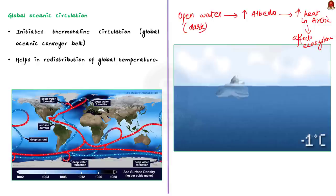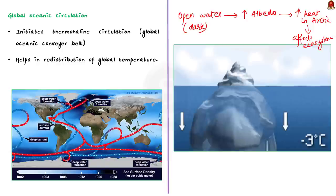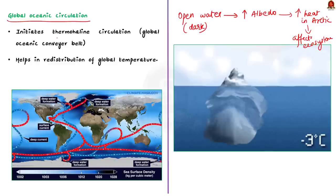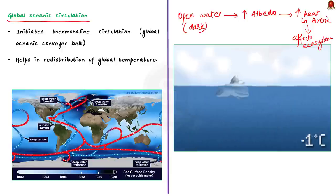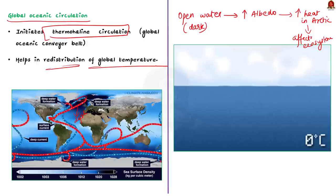Only by preventing Arctic ice melt can we prevent global climate catastrophe. The second role of Arctic ice is in global ocean circulation. The Arctic ice plays an important role in driving global ocean circulation patterns. The cold, dense water produced from sea ice formation sinks to the ocean depths, initiating a process known as thermohaline circulation or the ocean conveyor belt. This circulation helps to distribute heat and nutrients throughout the world's oceans, influencing regional and global climate patterns.